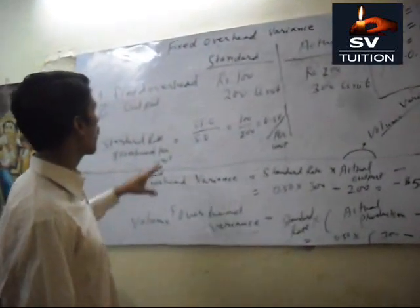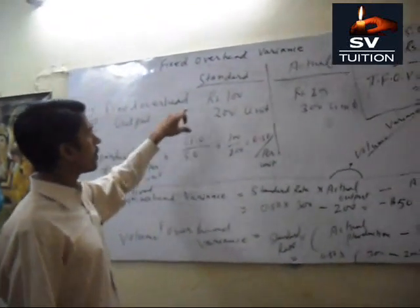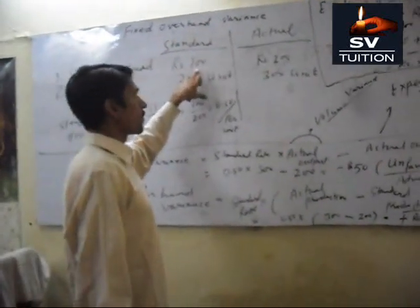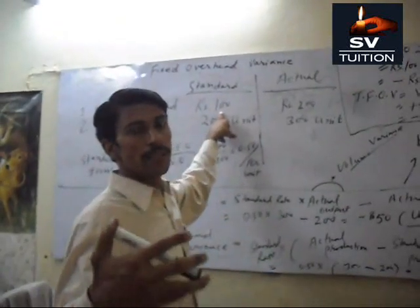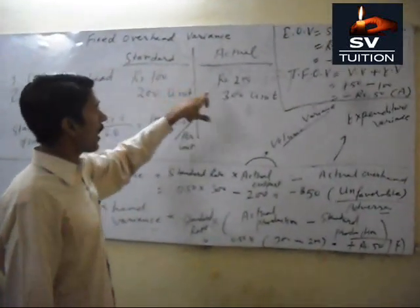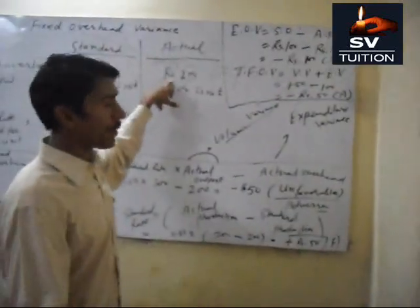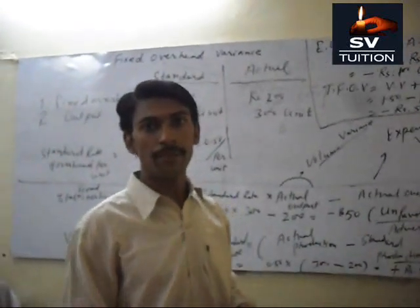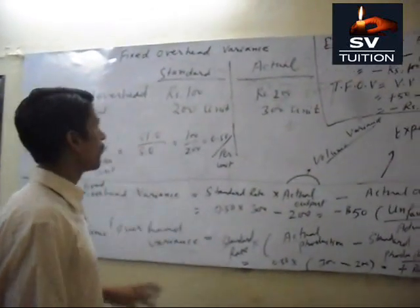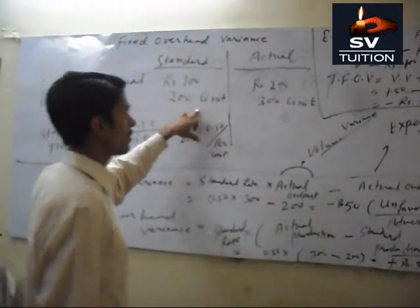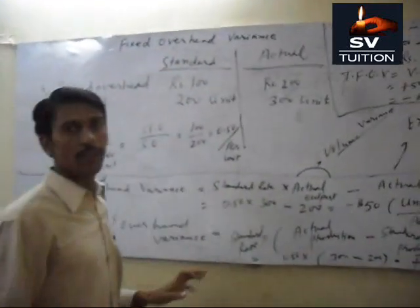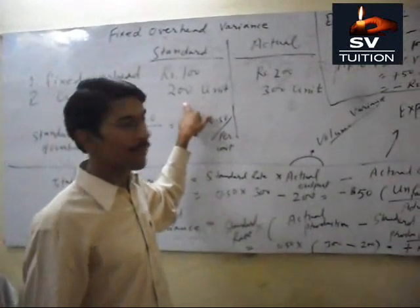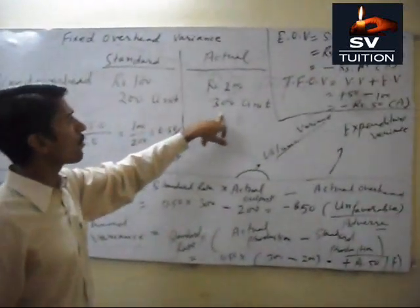For example, we have been given a problem. The standard fixed overhead is 100. So we pay the salary to the salesman as 100 — this is an estimate. The actual payment is 200. Our standard production is 200 units, and we have to relate the salesman's salary to our production. The actual production is 300 units.